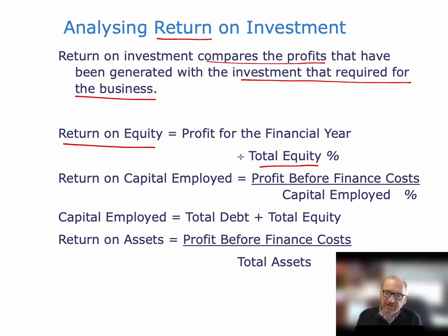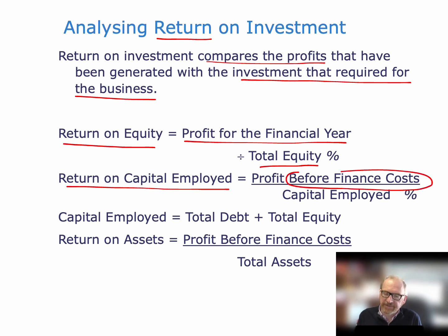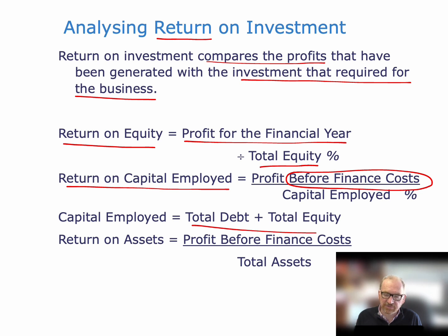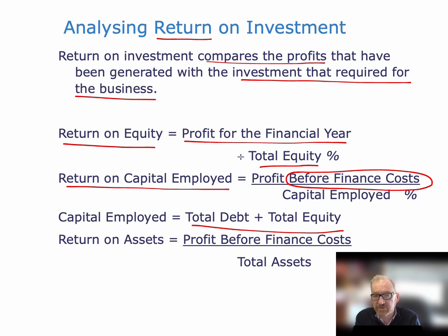Return on capital employed is profit before finance costs — and this is important, as these profits are before interest. Why? Because capital employed is total debt plus total equity. When we're including debt in the denominator of the ratio, we should exclude interest in the numerator, because interest is part of the return to the debt holders. It wouldn't be measuring return properly without this adjustment. So it's profit before finance costs over capital employed.